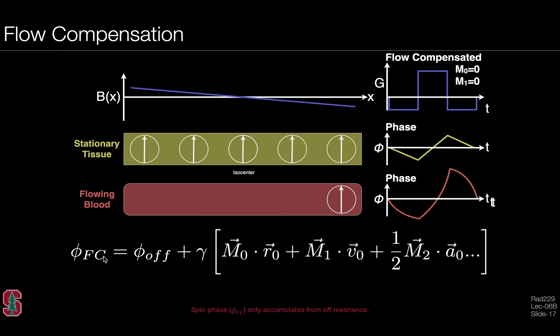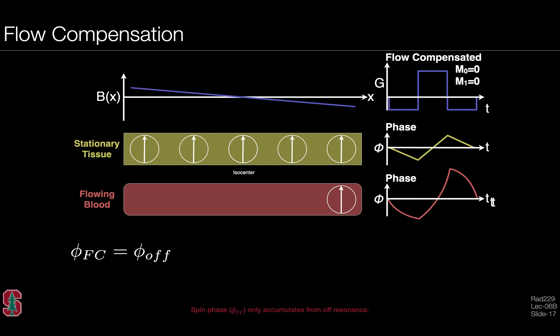In this so-called flow compensated experiment, the phase is the off-resonance phase plus gamma times the zeroth moment times the initial position, plus the first moment dotted with the velocity, plus the acceleration terms. But because this is a zero and first moment nulled gradient waveform, a lot of these terms drop out. We can get rid of those terms, and since the acceleration is not of concern, this particular gradient waveform won't be sensitive to position, velocity, or acceleration. Consequently, it allows us to directly estimate the off-resonance phase all by itself.